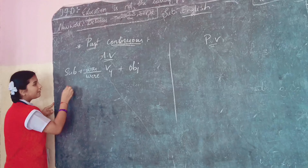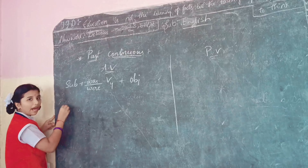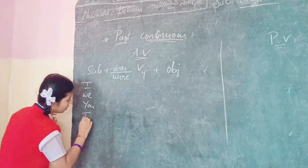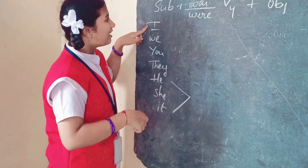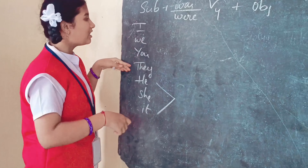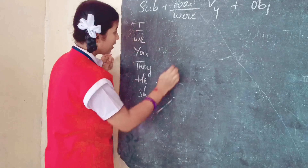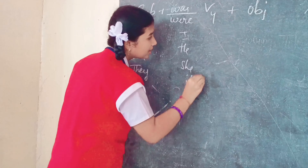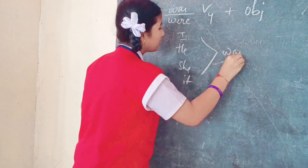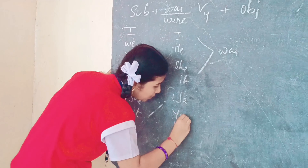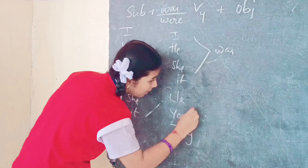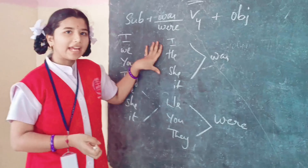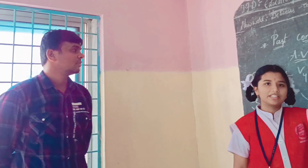The pronoun changes for was and were. The pronouns I, he, she, it take 'was', while we, you, they take 'were'. Same like this, we use was and were in passive voice also.